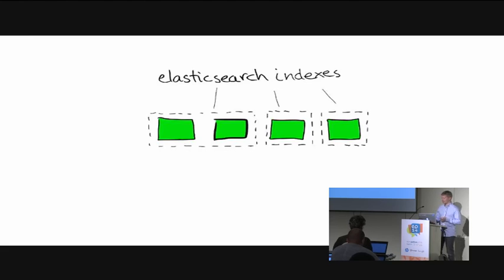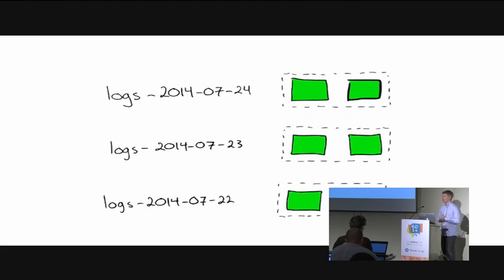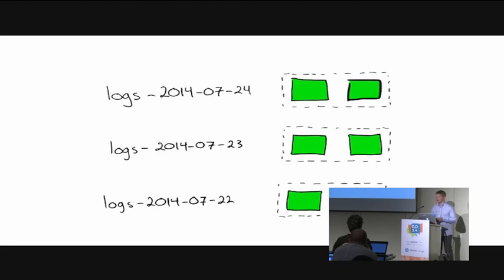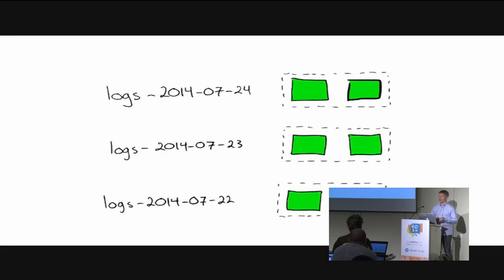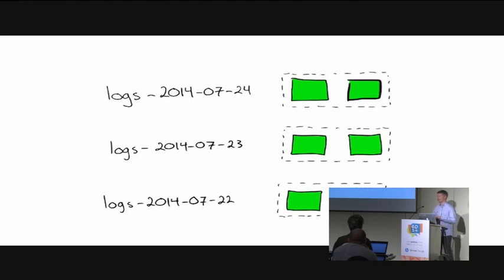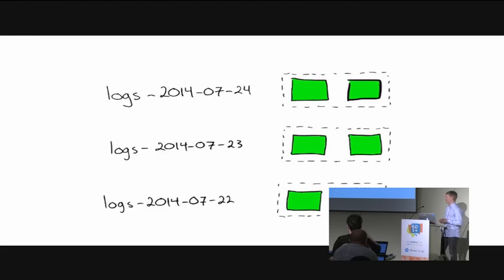One approach is so common it's worth mentioning: when you have log-like data with a timestamp, it's often a good idea to partition it into one index per day, for example. This massively reduces the search space when you only need to search today's or last week's data. When you need to delete older data you can simply delete the entire index — no need to mark documents as deleted and wait for removal. Indexing performance on today's data isn't affected by the fact that you have all historical data in other indexes.